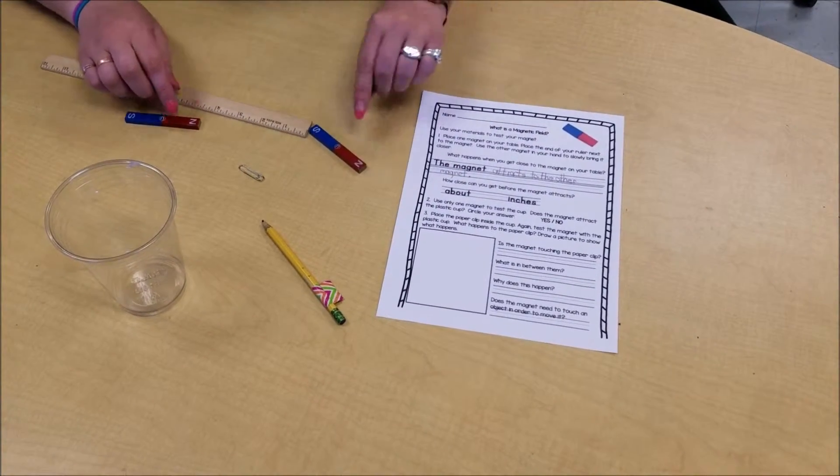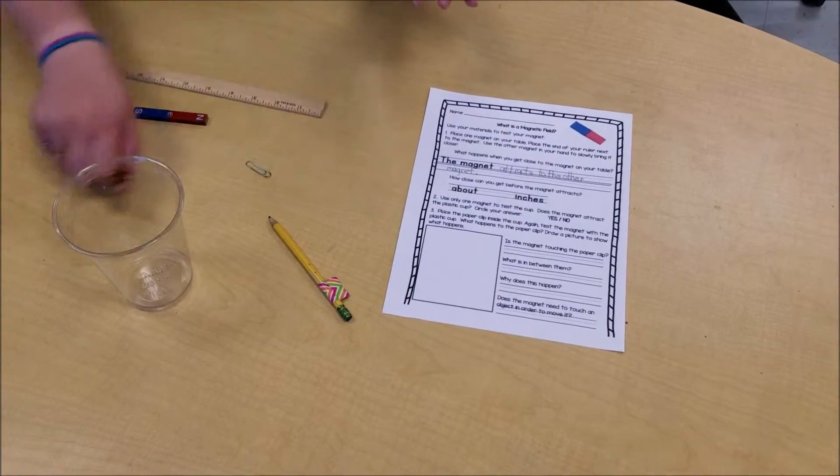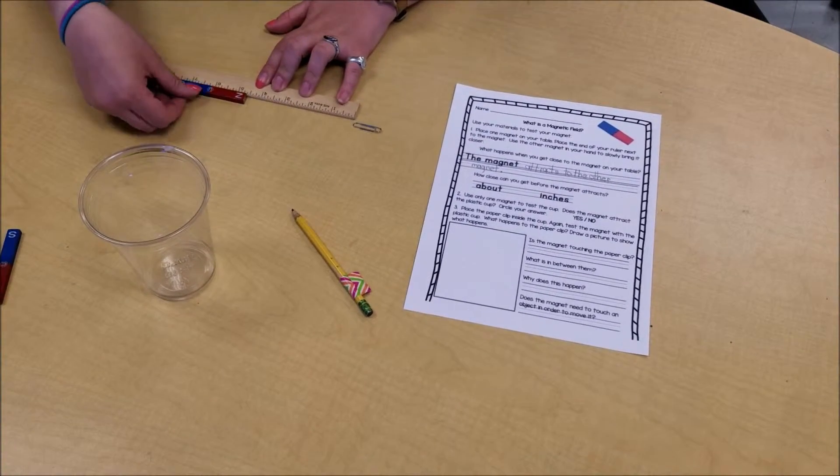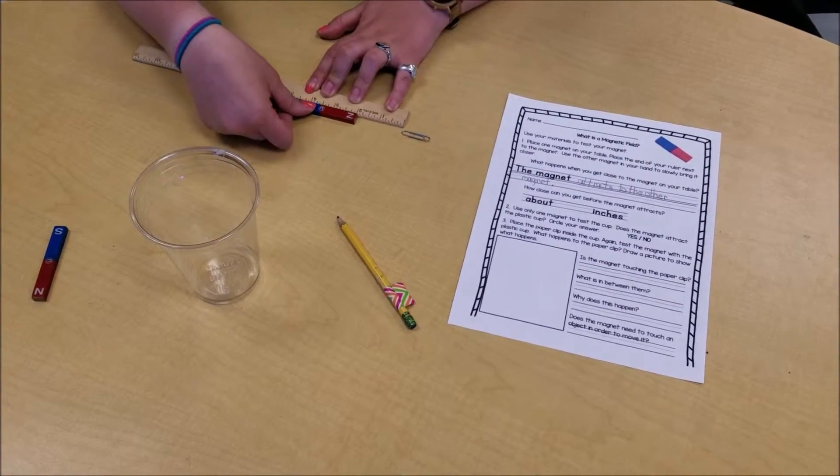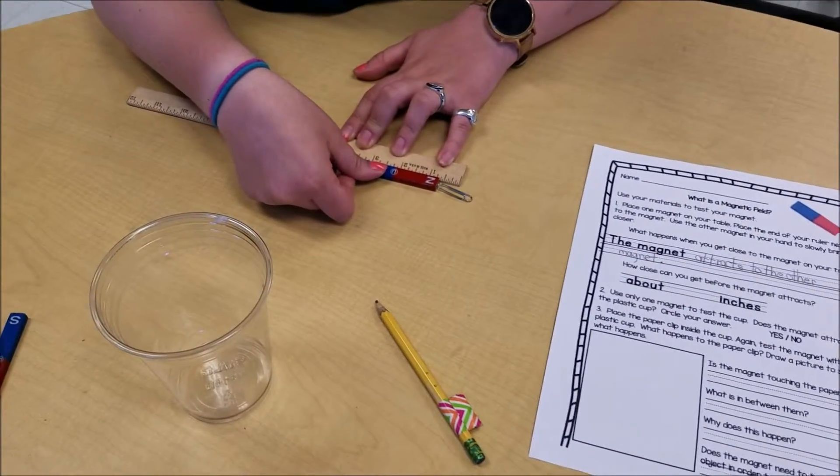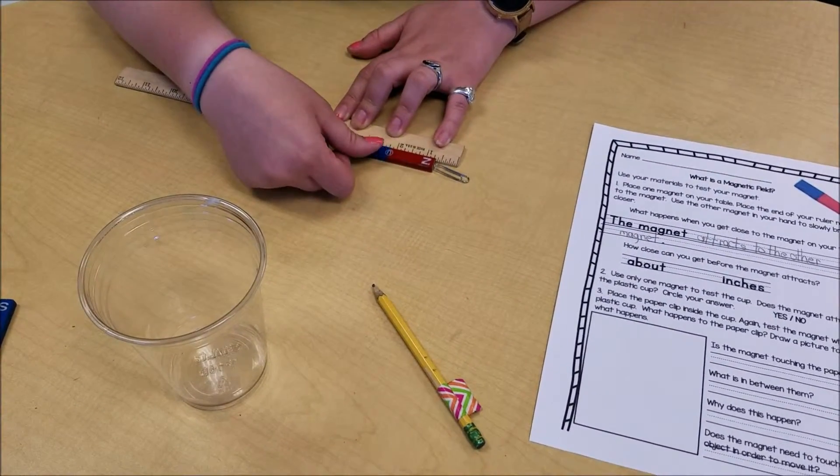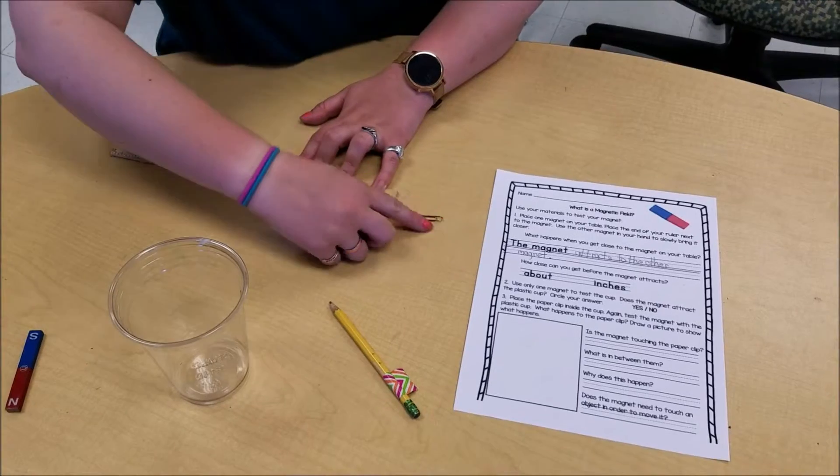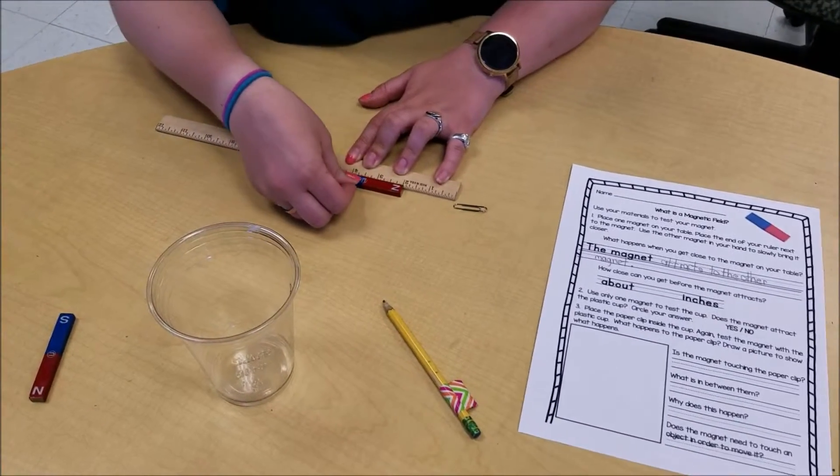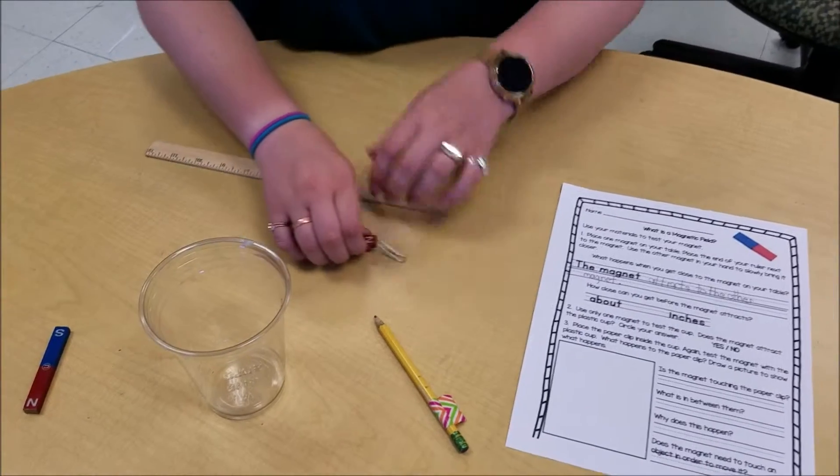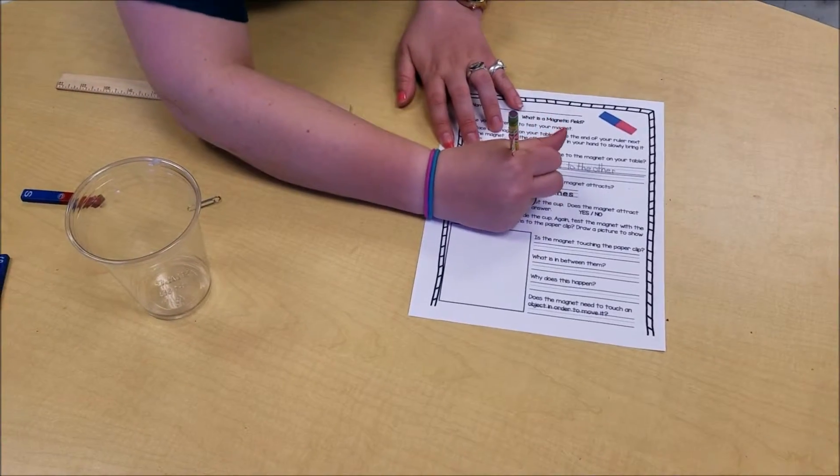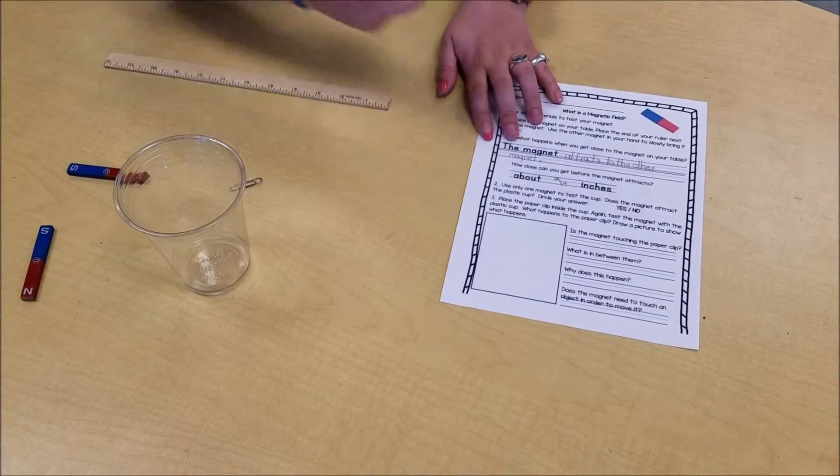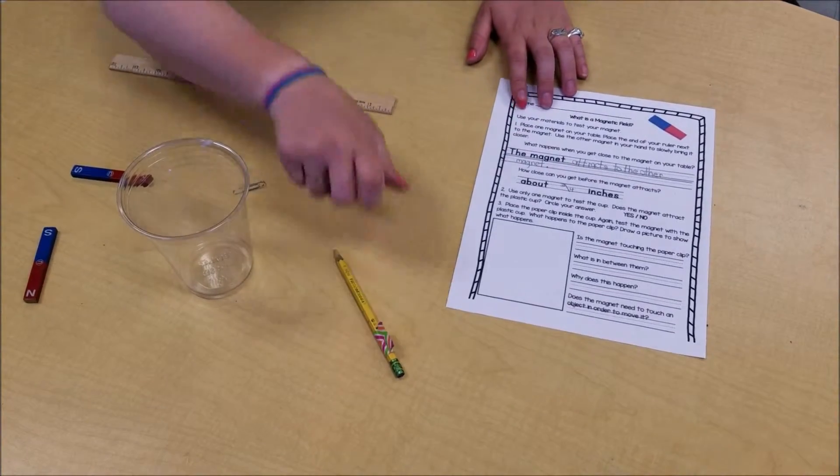Now they want to know how close I can get. My teacher did give me one other object that I can use, so I'm going to try a paper clip and see if it's more than a half an inch. I'm going to do the same thing, start at the end of my ruler and move my magnet closer. Oh, that was a little bit further. It looks like that one was about three quarters of an inch. I'll try it one more time just to be sure. Yeah, I would say that's about three quarters of an inch, so a little bit less than an inch.